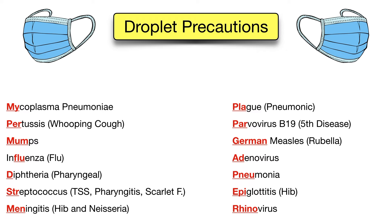Droplet precautions are also required for pneumonic plague, parvovirus B19 (also known as fifth disease), German measles (also known as rubella), adenovirus, and pneumonia. It's good practice to use droplet precautions for all pneumonia, which includes streptococcal pneumonia, mycoplasma pneumonia, and pneumonic plague already mentioned. Droplet precautions are also required for epiglottitis, typically caused by Haemophilus influenzae type B, and finally for rhinovirus as well.